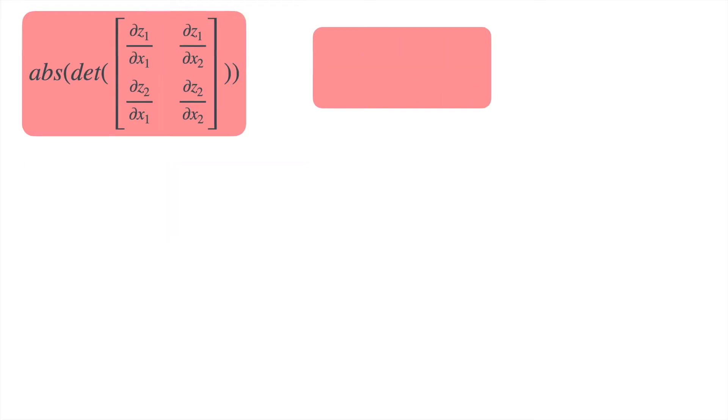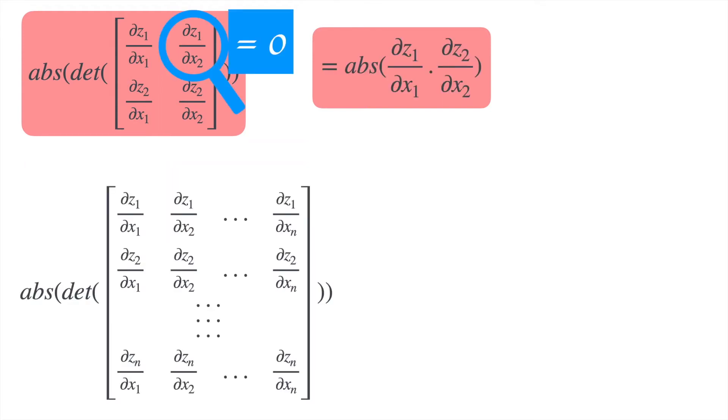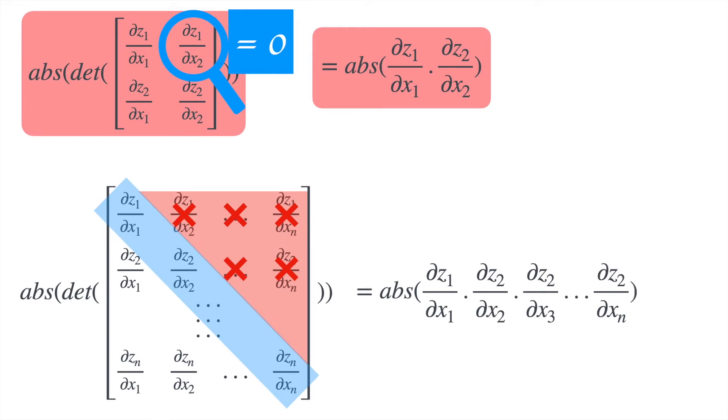Say we have data with n dimensions and we want to make it easy to evaluate the value of this determinant. What we want to do is set these values dZ1 by dX2, dZ1 by dX3, and so on to be equal to 0. In other words, we want all the values in the upper half of this matrix to be equal to 0.